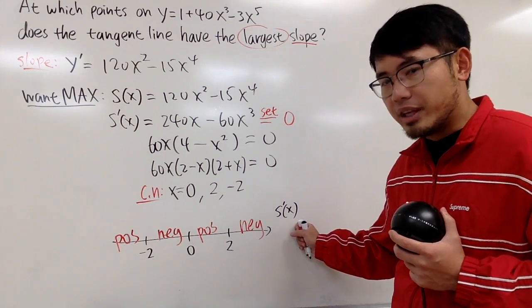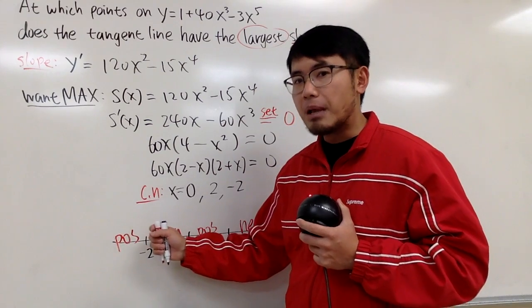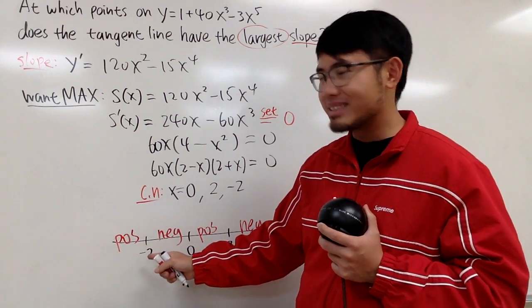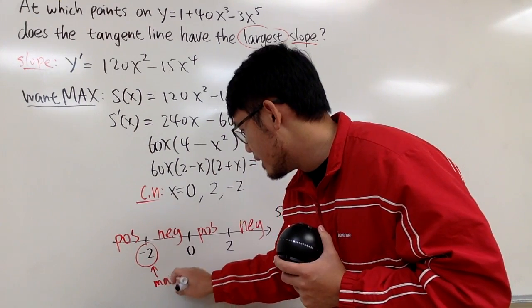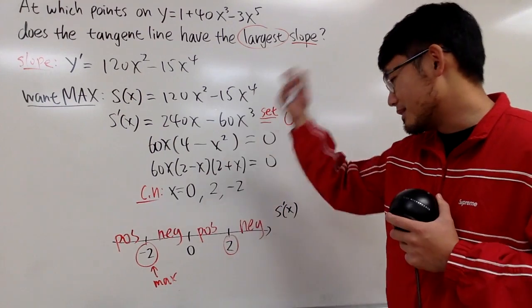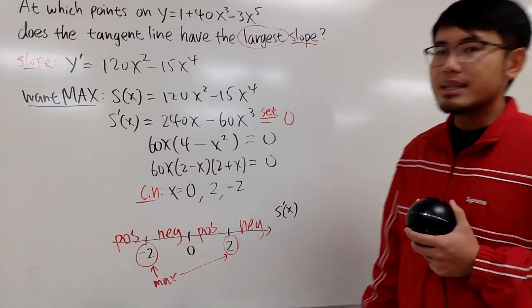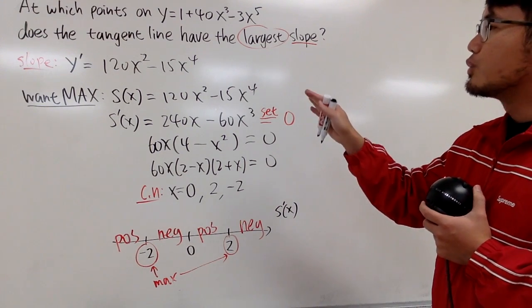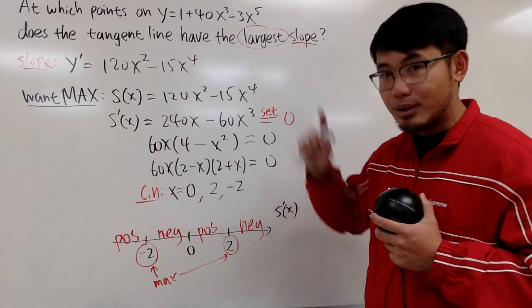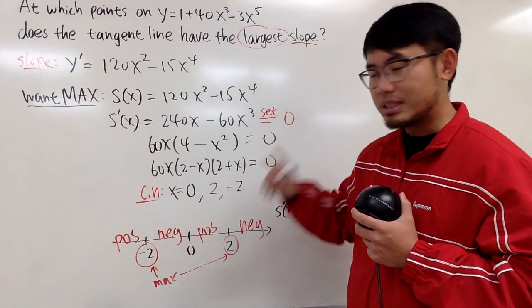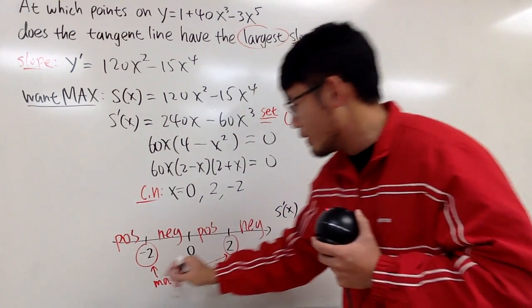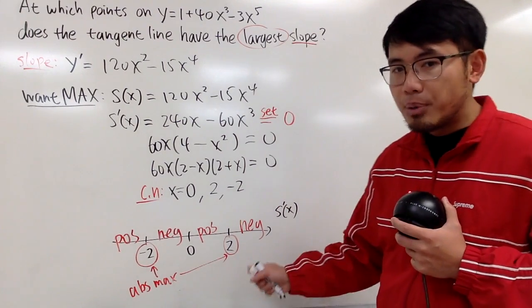Looking at the sign chart of S', at x = -2 the sign changes from positive to negative, meaning S goes from increasing to decreasing — so there's a local max at x = -2. At x = 2 the sign also changes from positive to negative, so there's a local max there too. The question asks which gives the biggest slope, and notice that plugging in 2 or -2 gives the same S value since x is squared in S(x). They are both absolute maxima.